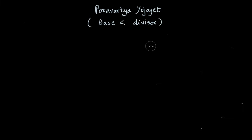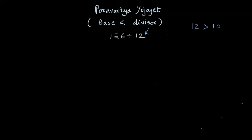We are going to learn about a method of division where the base is less than the divisor. This is known as the Paravartya Yojayet method. We can take an example: 126 divided by 12. As you can see, the divisor 12 is greater than the base, which is 10 — a power of 10 that is nearest to 12.